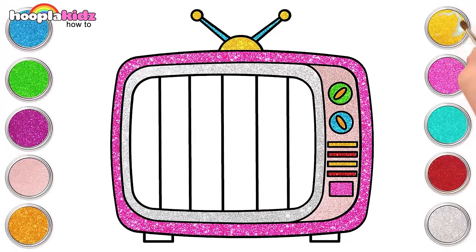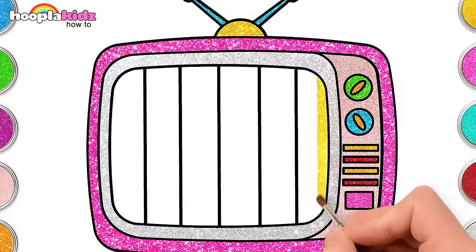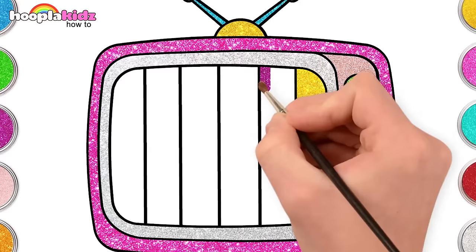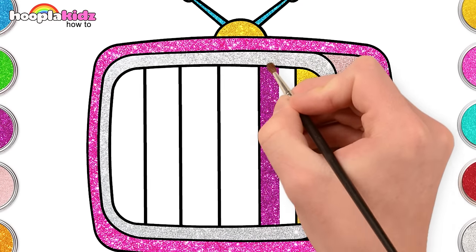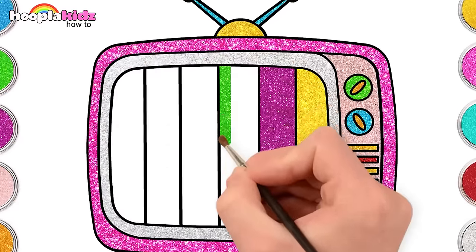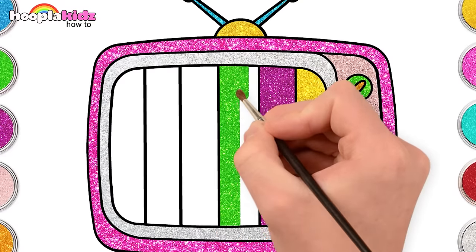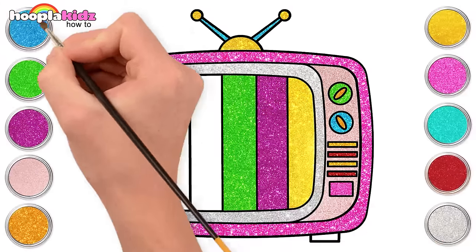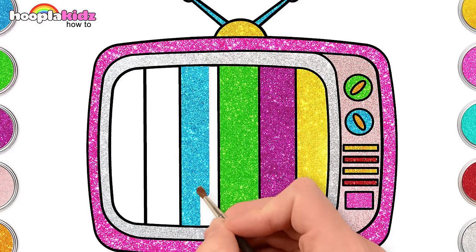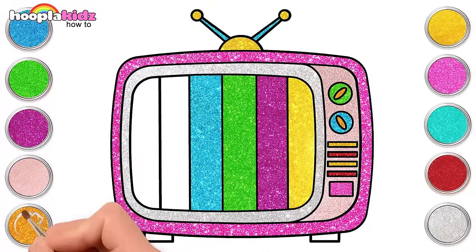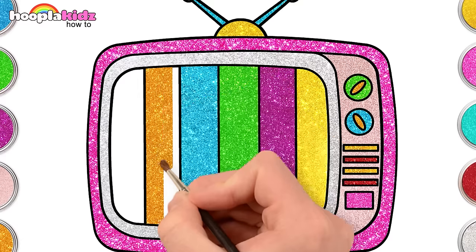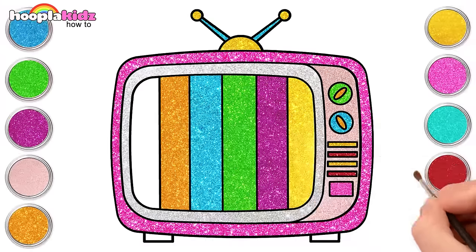Now, let's paint the picture in the TV. We can use a little of yellow, magenta, green, blue, orange, and finally red.